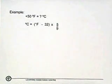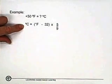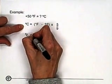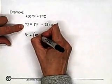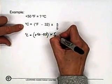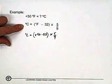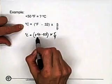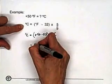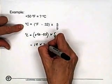We have 50 degrees Fahrenheit and we want to express it in degrees Celsius. Start with the formula: degrees Celsius is equal to degrees Fahrenheit minus 32 times 5 ninths. Substituting, degrees Celsius is equal to plus 50 minus 32 times 5 ninths. What you're doing is substituting the value for Fahrenheit into that position in the formula.